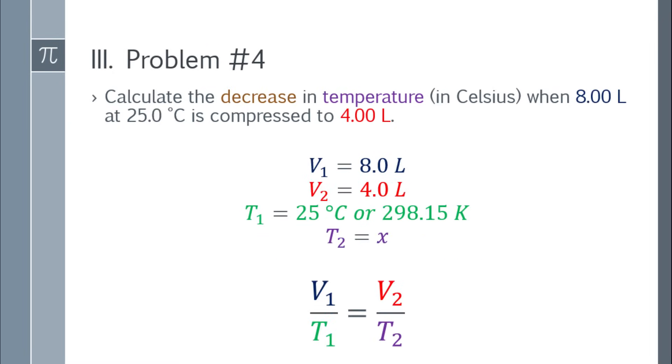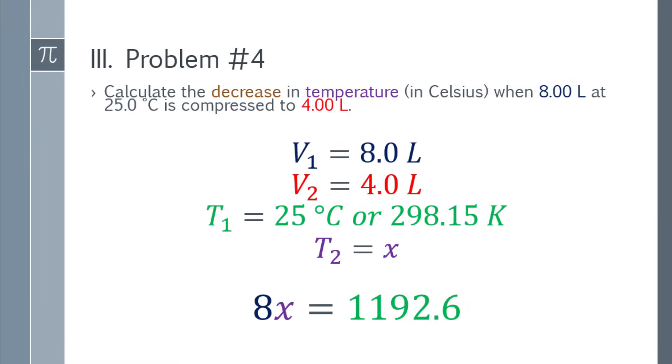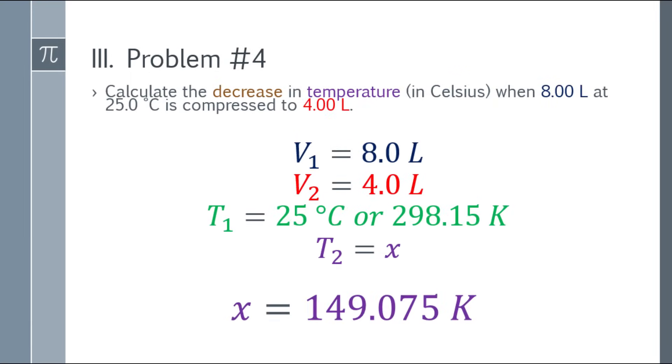So we'll get to that. Write the formula and substitute the values. So that will be 8 over 298.15 equals 4 over x. To find the value of x, cross-multiply. So that will be 8x equals 1,192.6. Divide both sides by 8 and that will be 149.075 Kelvin.